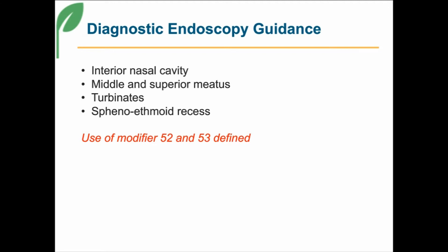Use modifier 52 to reduce services if a repeat examination is not planned — meaning the doctor didn't look at all those areas and a follow-up is not scheduled. If they plan on coming back for a repeat exam, and this is all driven by documentation, then modifier 53 is what you use, which is for discontinued procedures.